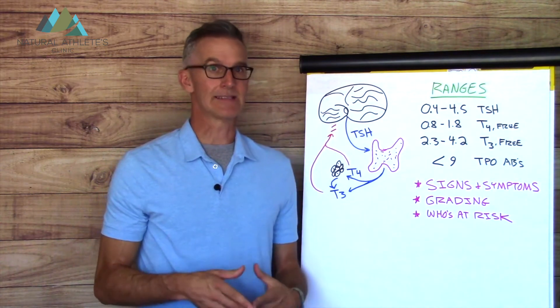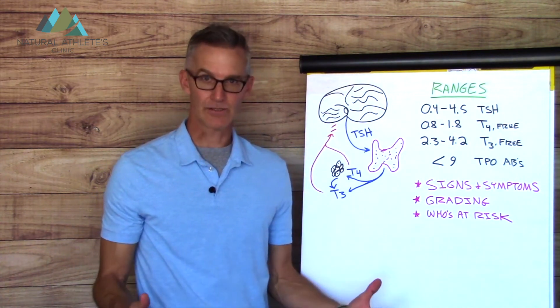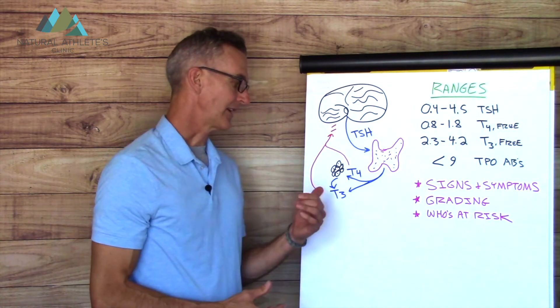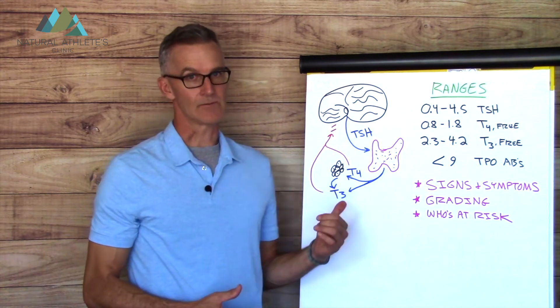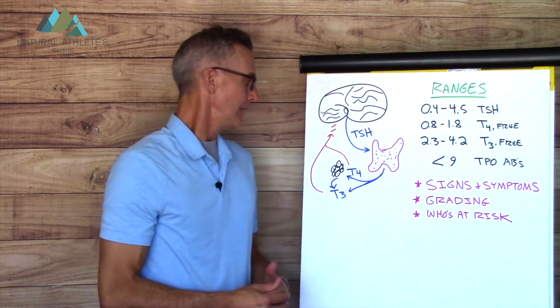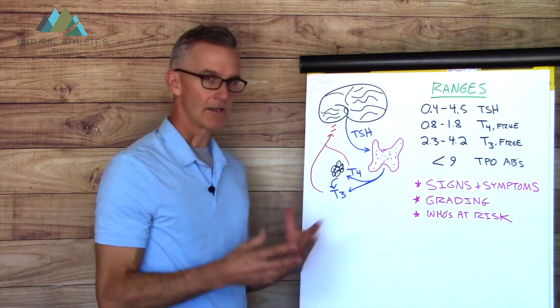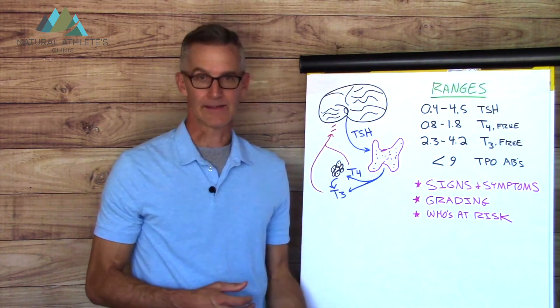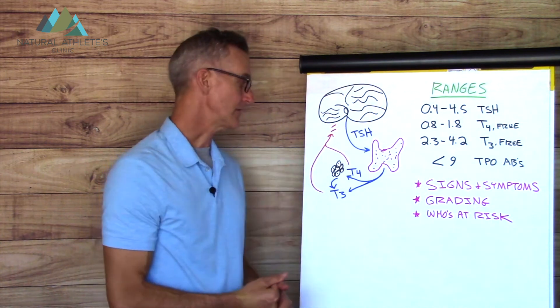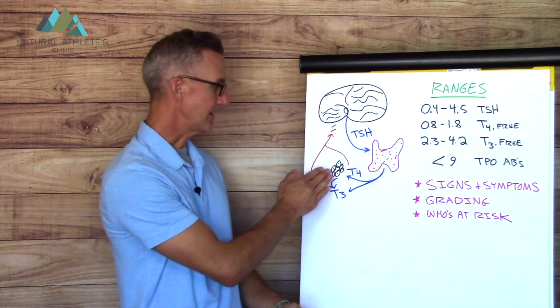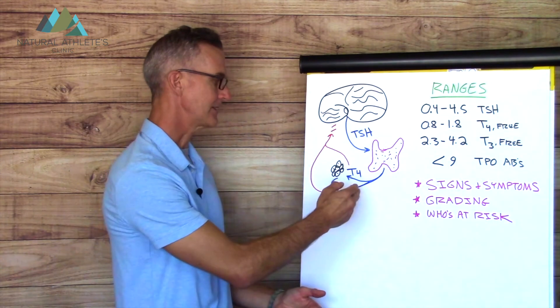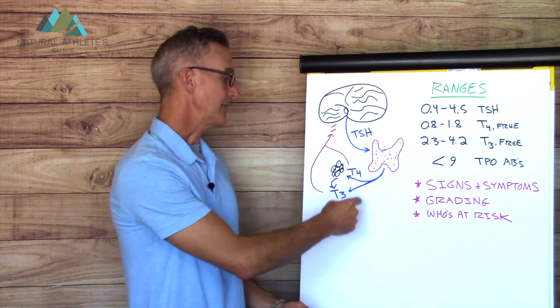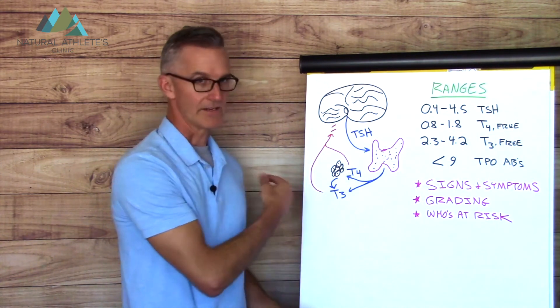T4 is pretty inert - it really doesn't have any action in your body. It needs to get converted into T3, and the T3 is what does the thyroid magic. Now T4 gets converted a little bit in the bloodstream by itself, it gets converted a lot in the kidney and liver, and then also to some extent in every single cell of your body. This is a collection of cells there, so you're going to see conversion of that T4 into T3. T3 is the active hormone.